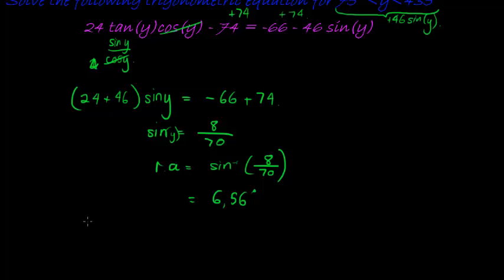So first I need to get my general solution, which was what I have just done, so my general, or what I am doing first of all I mean, so y is either equal to 6.56 plus 360 times k.